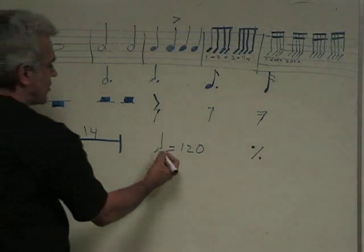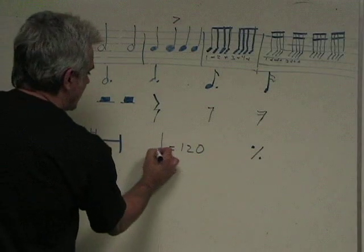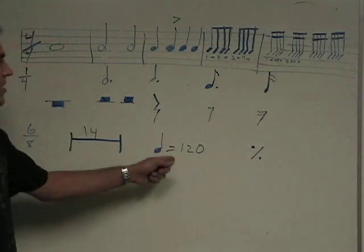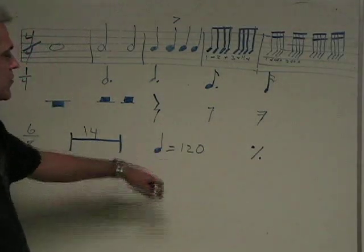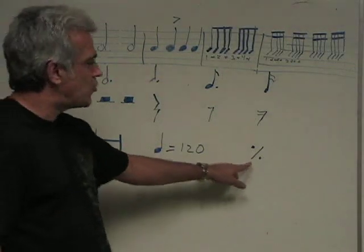Sometimes right at the top of the music you're going to see this. Quarter note equals 120. It's just giving you the tempo, so you know what to set your metronome to. This little guy is not a division symbol. This is a repeat.